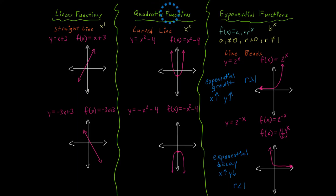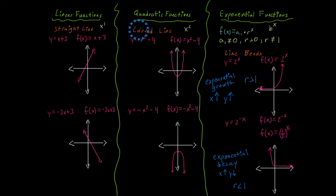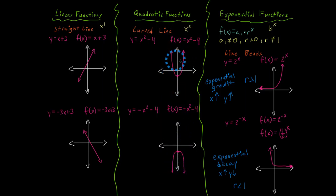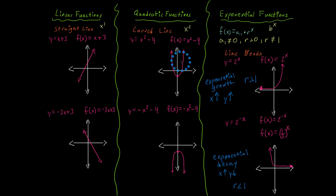A couple of things I want to state as reminders. When you're looking at the function, x is raised to the second power — so you have a power of two. Also, the graph that's created is a curved line that's either facing upward or facing downward, depending on the function that you're given. That curved line is called a parabola, and it could either be wide or narrow, also depending on the function you're given.